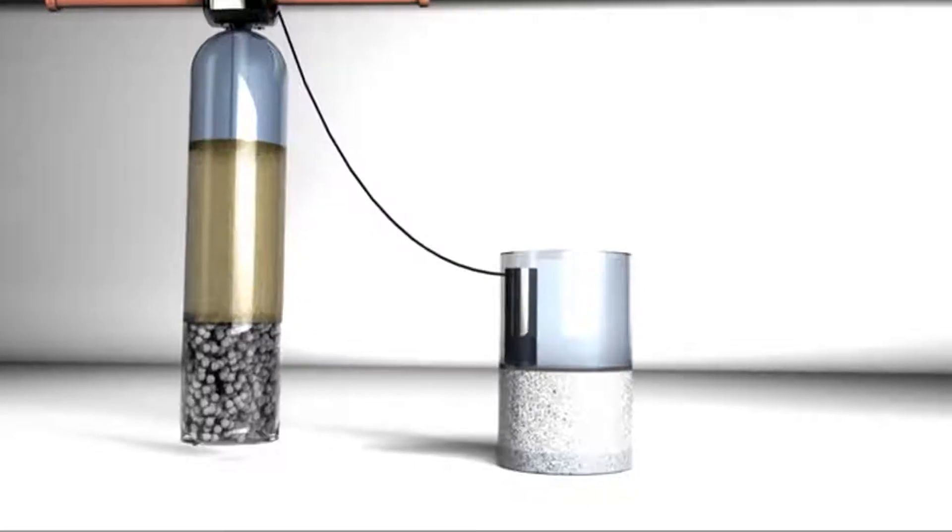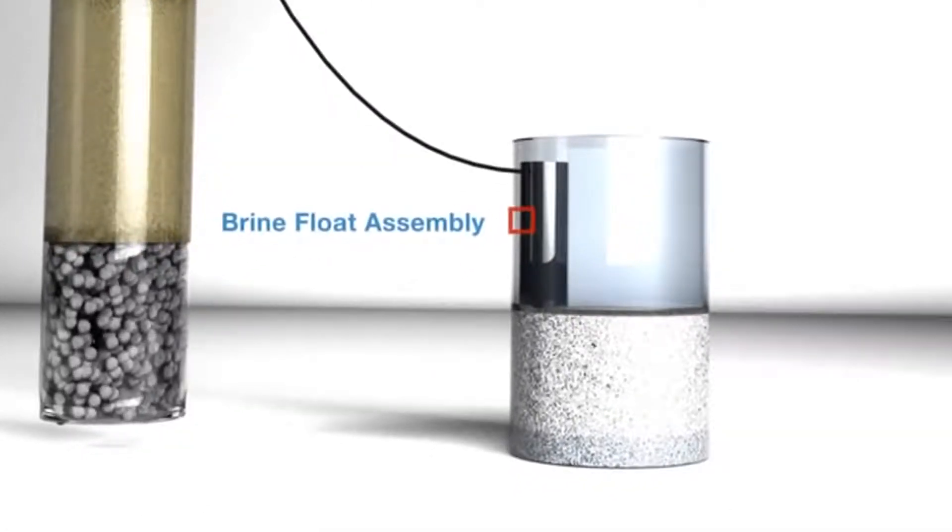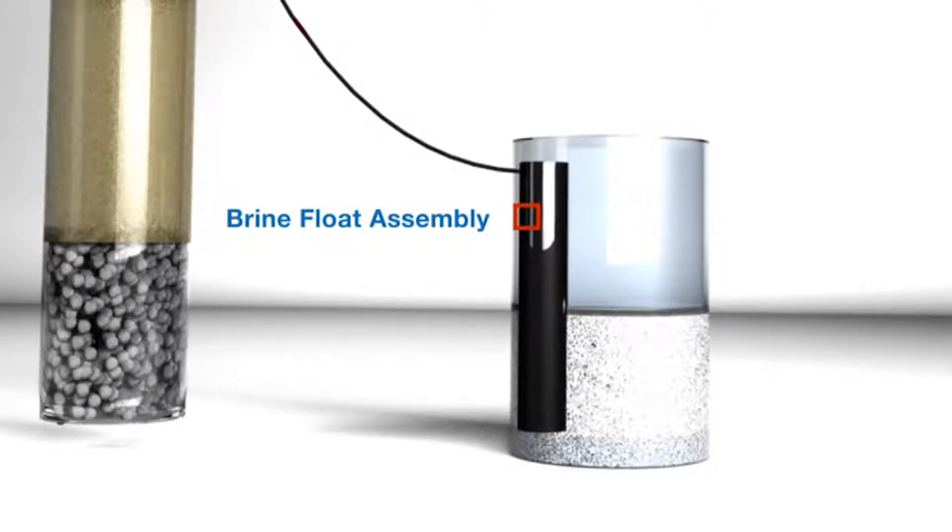Inside that brine tank, you'll find the brine float assembly. Plumbers will notice this part resembles a large ball-cock assembly, with one difference. It has an air inductive valve at the bottom, which allows water to come up.